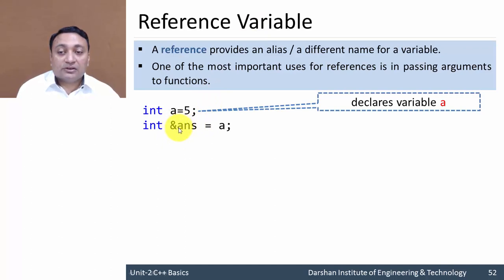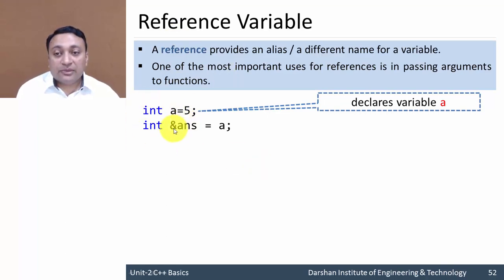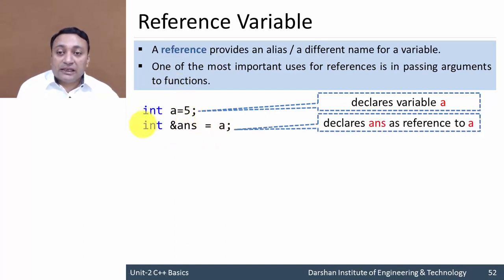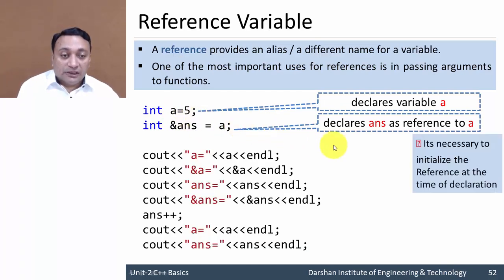Here 'answer' is a variable name. If we want to declare 'answer' as a reference variable, we use the ampersand sign — it seems very similar to a pointer variable where we use an asterisk prefix. So 'answer' is a different name for 'a'. If we print 'a' it displays 5; if we print 'answer' it also displays 5.